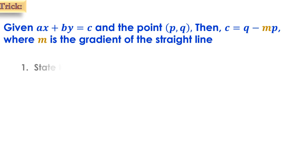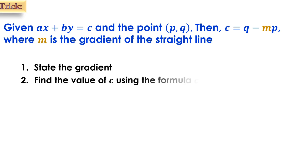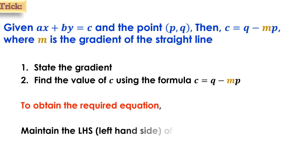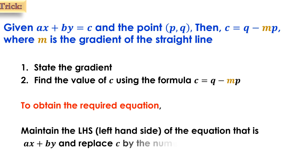Step 1: State the gradient. Step 2: Find the value of c using the formula c equals q minus mp. To obtain the required equation very quickly, maintain the left-hand side of the equation, i.e., ax plus by, and replace c by the numerator of the result obtained in step 2.